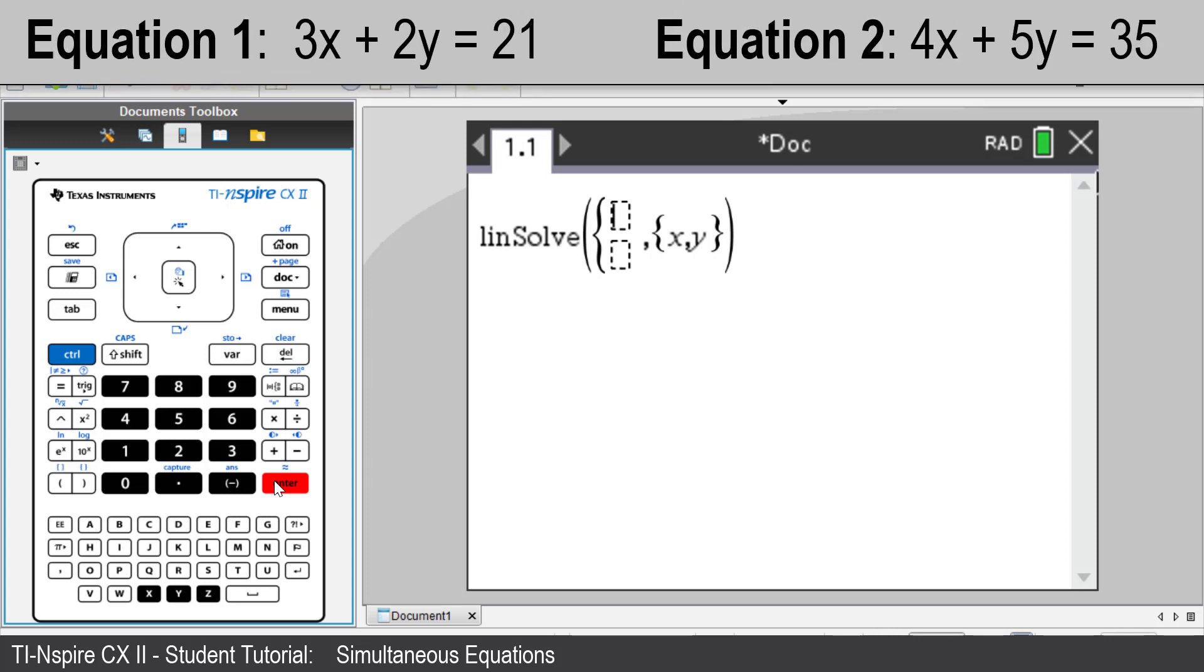Enter the first equation: 3X plus 2Y equals 21. Use the down arrow to enter the second equation: 4X plus 5Y equals 35.